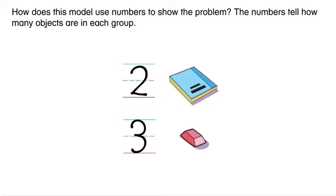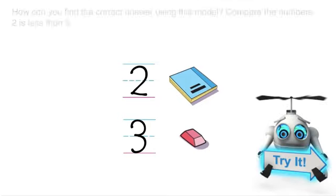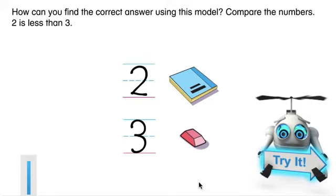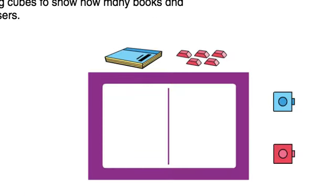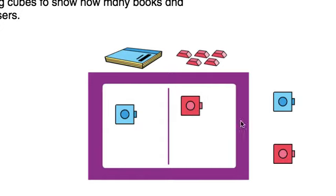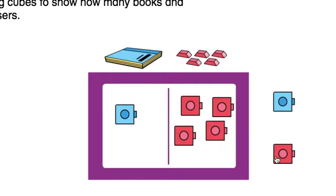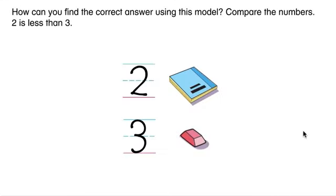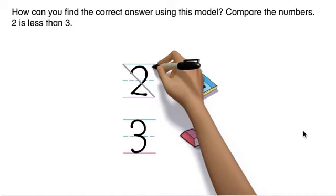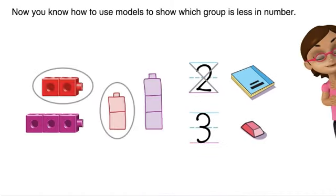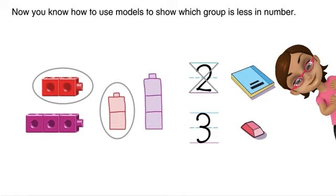How can you find the correct answer using this model? Drag cubes to show how many books and erasers there are. Compare the numbers: two is less than three. Now you know how to use models to show which group is less in number.